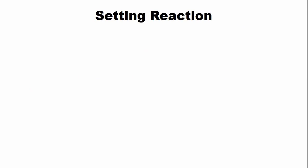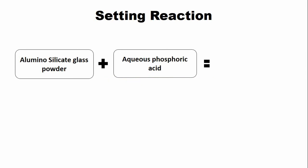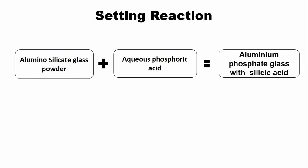Now the setting reaction. The powder and liquid are mixed with each other. An acid-base reaction occurs that results in the formation of aluminium phosphate glass with silicic acid. This is the setting reaction of silicate cement.